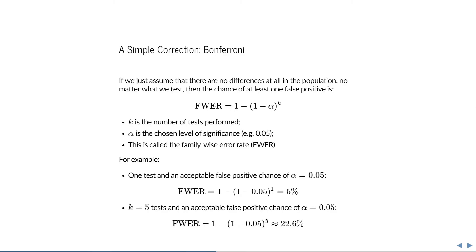Let's start with the most simple interpretation of this problem and the correction for it. This is called the family-wise error rate, and it assumes that there are no differences at all in the population among all the tests that we perform. If we assume this, then the chance of at least one false positive is 1 minus (1 minus the chosen level of significance) to the power of the number of tests. So k is the number of tests in this formula, and alpha is the chosen level of significance, like 0.05 for example.